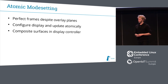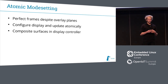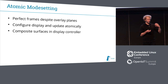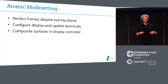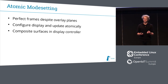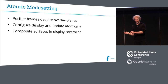A second abstraction is atomic mode setting. If you want to use overlay planes of your hardware and you put your frame on one plane after another, you might get in-between states where you have the old state on one plane and the new state on the other. So you want to change all at once — that's possible with atomic mode setting. This allows the compositor to really make use of all the different hardware planes, because it just sets up the new state and sends it to the display hardware all at once.